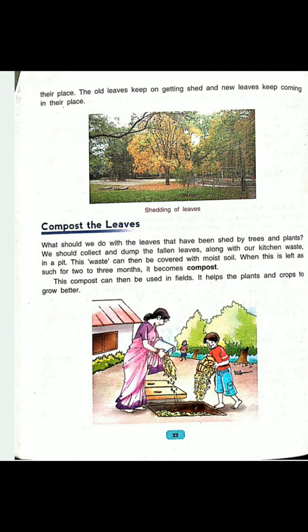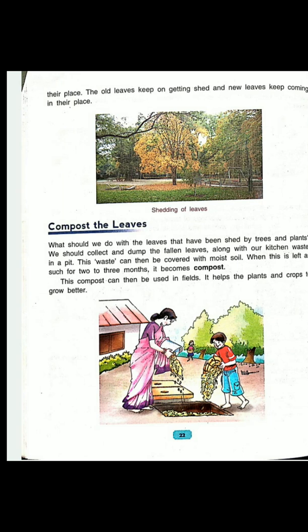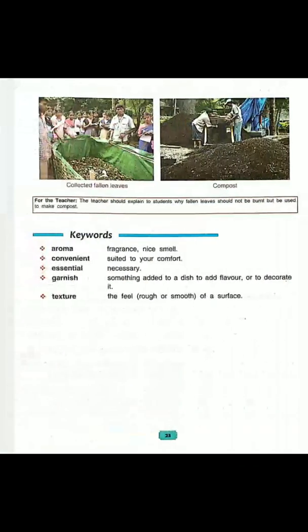Keywords: aroma — fragrance, nice smell; convenience — suited to your comfort; essential — necessary; garnish — something added to a dish to add flavor or to decorate it; texture — the feel of a smooth or rough surface. You have to remember these keywords and show me by writing them.